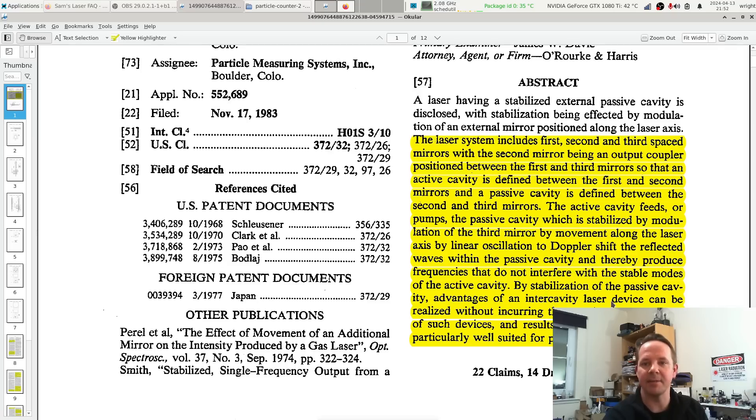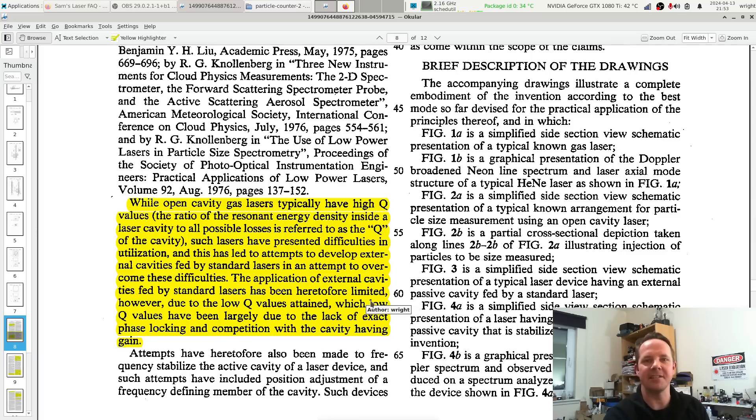It just oscillates, and what this does is it Doppler shifts the reflected waves within the passive cavity and thereby produces frequencies that don't interfere with the stable modes in the laser itself. That's more or less it.